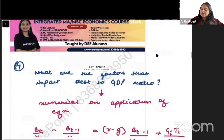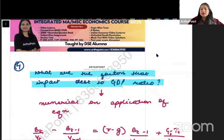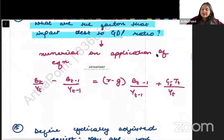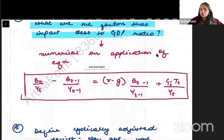Question number 4 beta. What are the factors that impact debt to GDP ratio? On this again I am expecting that ek numerical. So from unit 1 basically there will be one numerical that will be asked in exam. Exam mein ek numerical aega unit 1 se. So it can be on either of the equation.